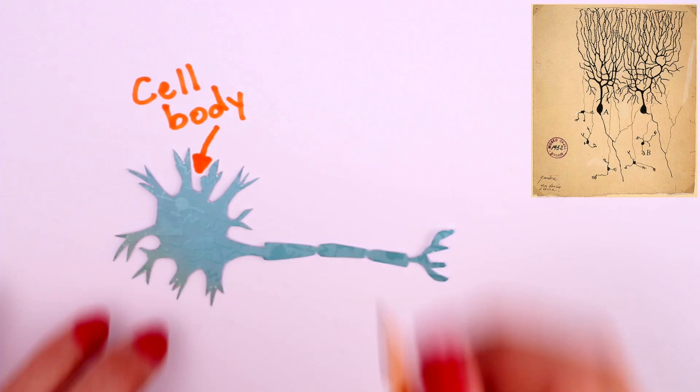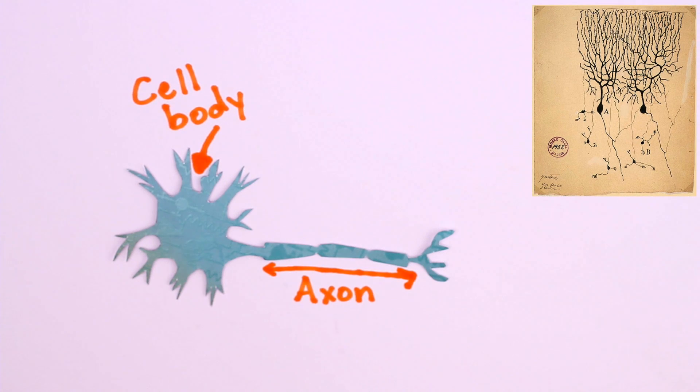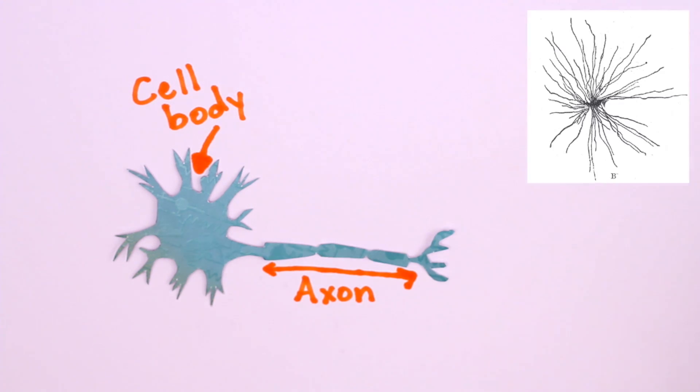We could now clearly see the cell body and the axon, the fiber that conducts electrical impulses over long distances. But Golgi's stain also revealed something else – cells that looked like tiny spiders throughout the brain.